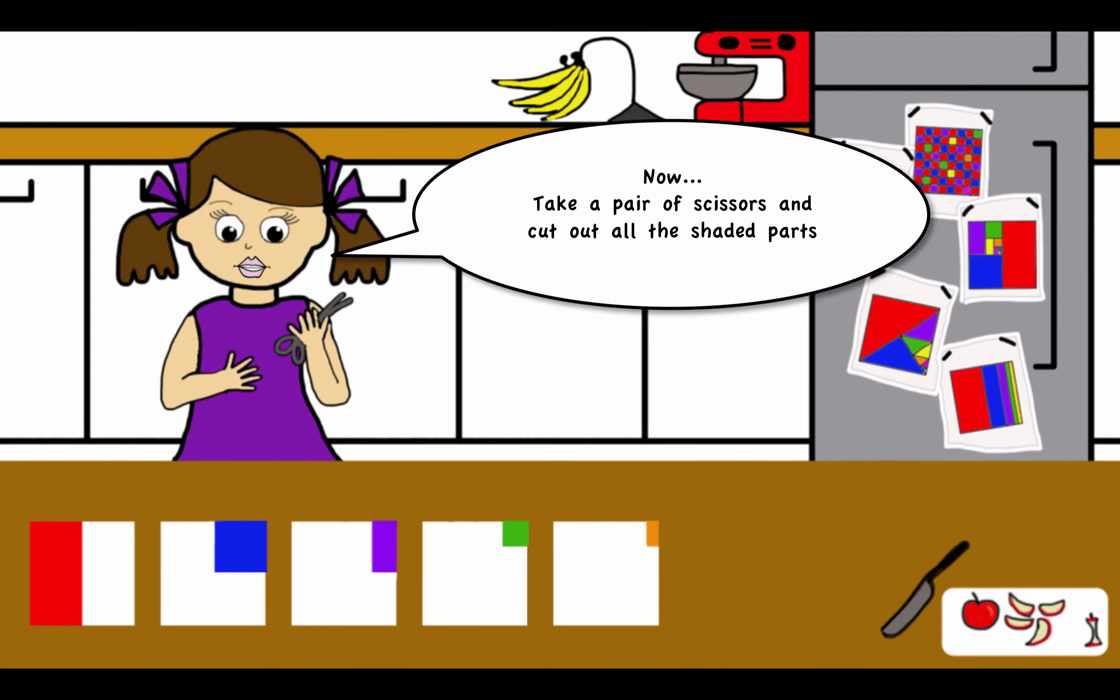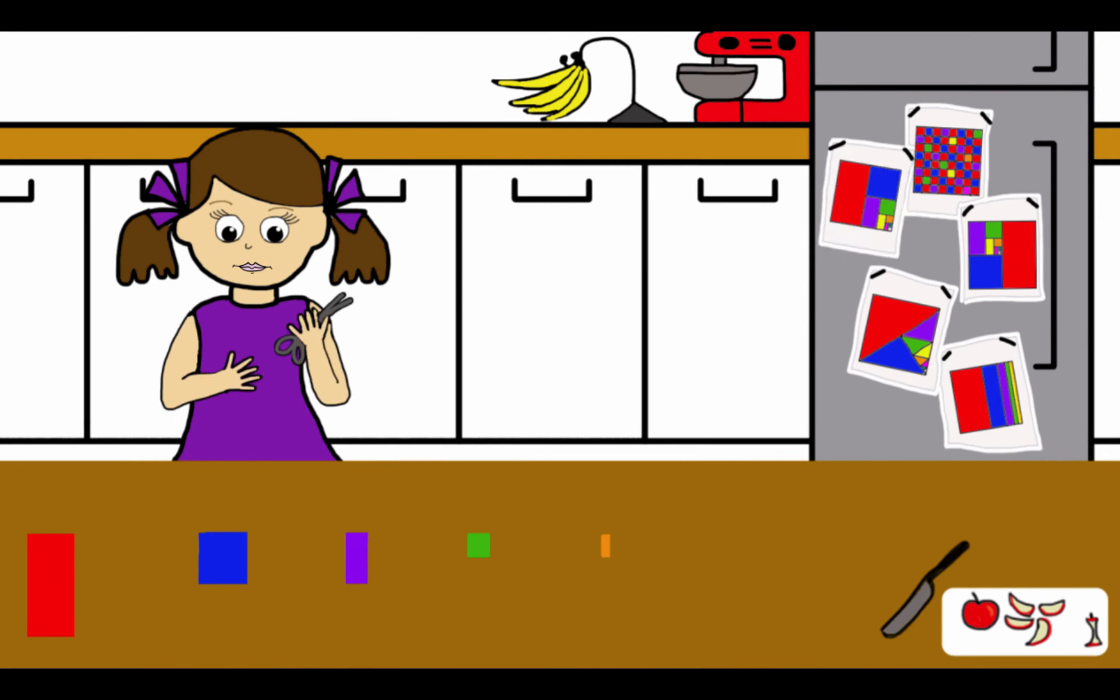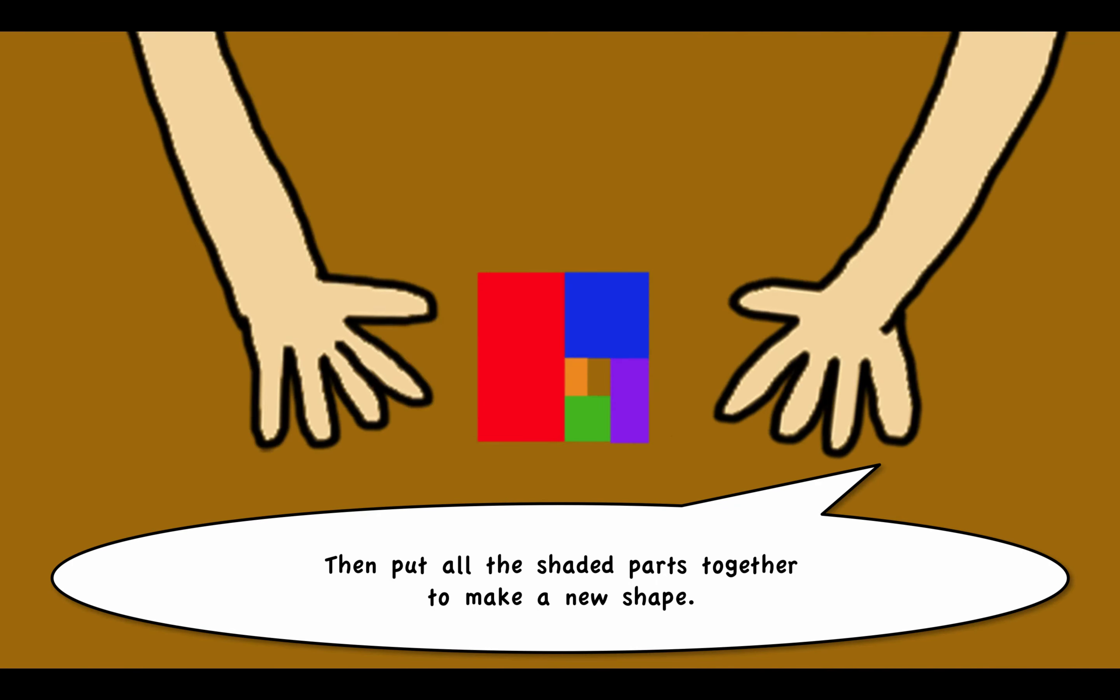Now, take a pair of scissors and cut out all the shaded parts. Then put all the shaded parts together to make a new shape.